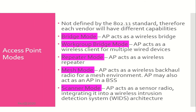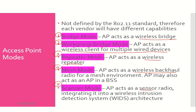Access point modes: the 802.11 standard does not define these AP operational modes, so every wireless LAN vendor will have different capabilities. Operational modes include: Bridge mode — AP acts as a wireless bridge; Workgroup bridge mode — AP acts as a wireless client for multiple wired devices; Repeater mode — AP acts as a wireless repeater; Mesh mode — AP acts as a wireless backhaul radio for a mesh environment, and may also act as an AP in a BSS; Scanner mode — AP acts as a sensor radio integrated into a wireless intrusion detection system architecture.